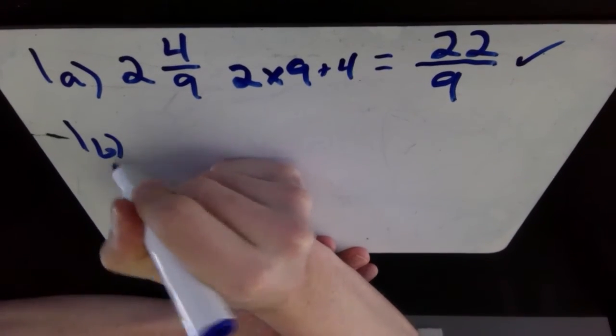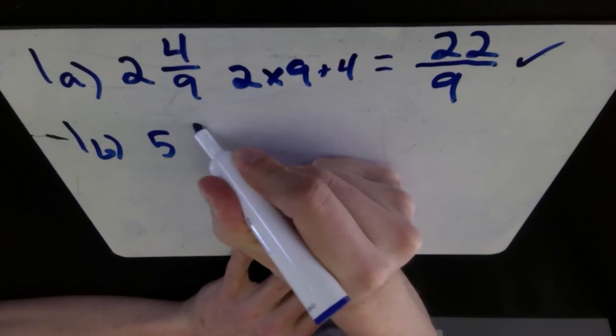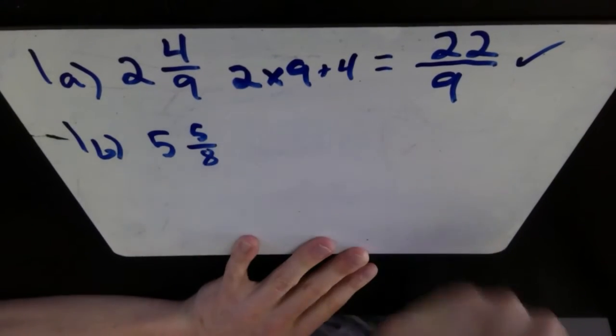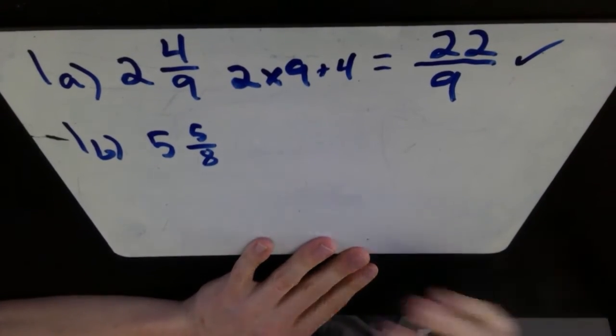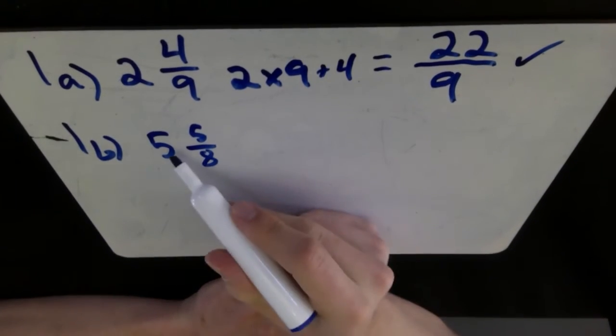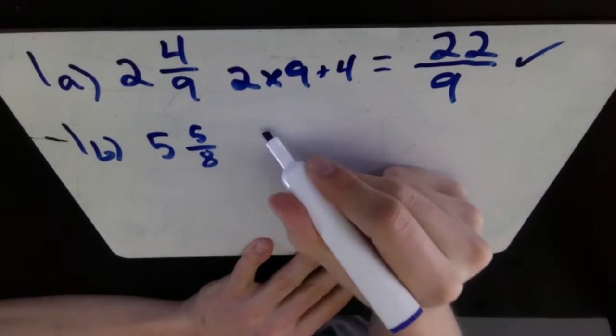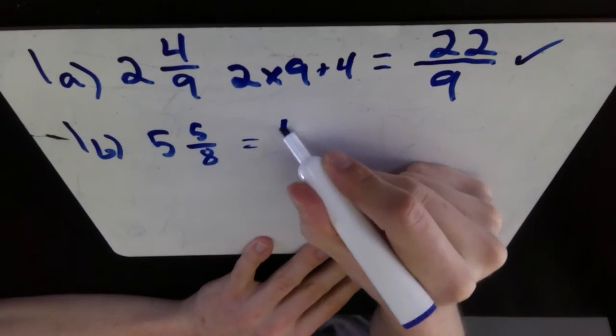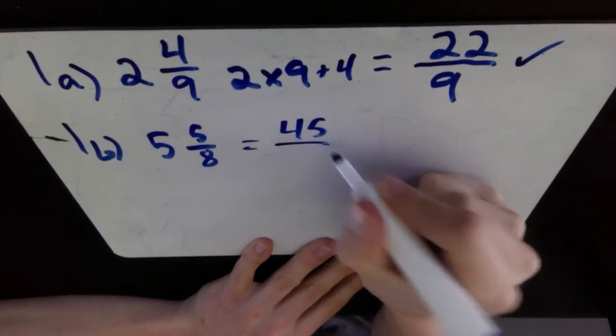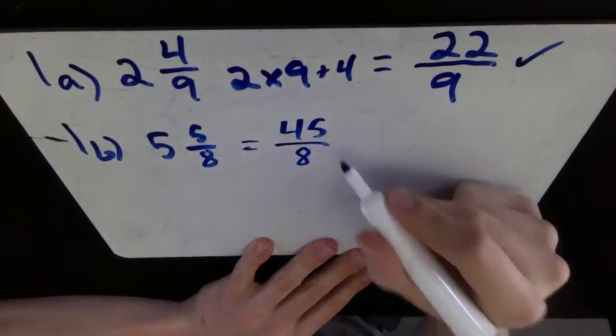1B. We have 5 and 5 over 8. So 5 and 5 eighths. Going through here, we're going to do the same thing. Multiply 5 by 8, which is 40, plus 5 is 45. So your numerator becomes 45. Your denominator stays as it is, 8. There's your second mark.